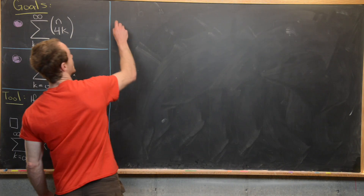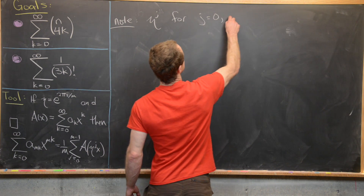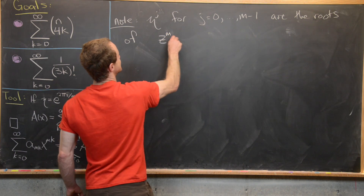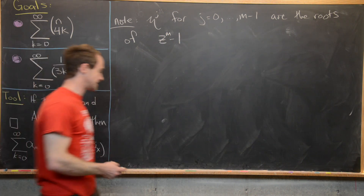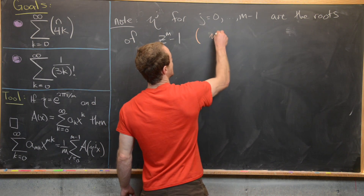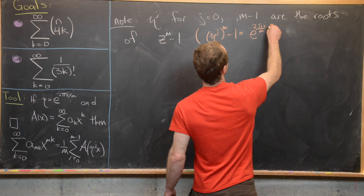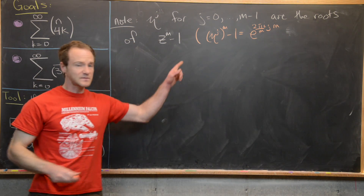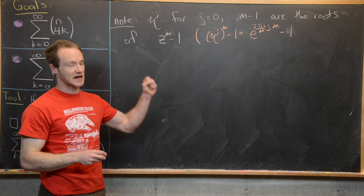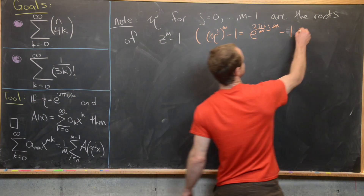So let's get to proving this tool. The first thing to notice is that η^j for j equals 0 to m minus 1 are the roots of the polynomial z^m minus 1. That's not too hard to see directly by plugging η^j into z^m minus 1: we get η^(jm) minus 1, which equals e^(2πi/m · j · m) minus 1. The m in the numerator and denominator cancel, leaving e^(2πij) minus 1, which is 1 minus 1 = 0.